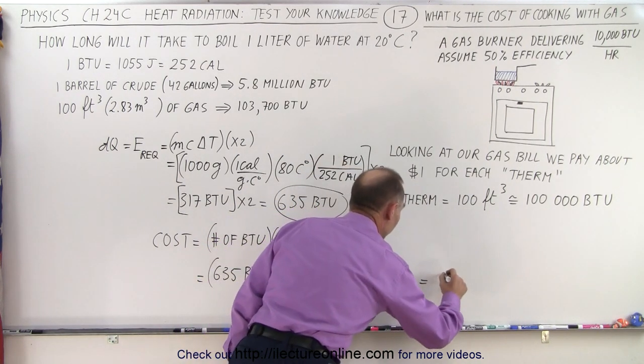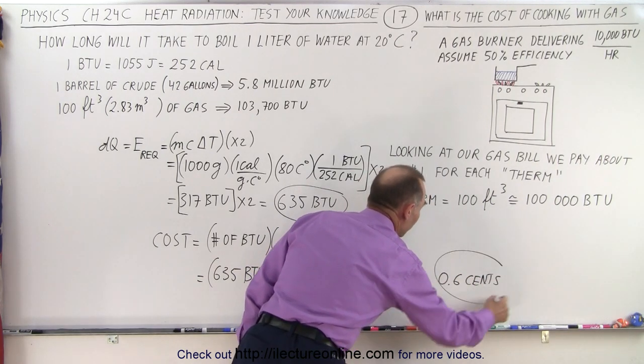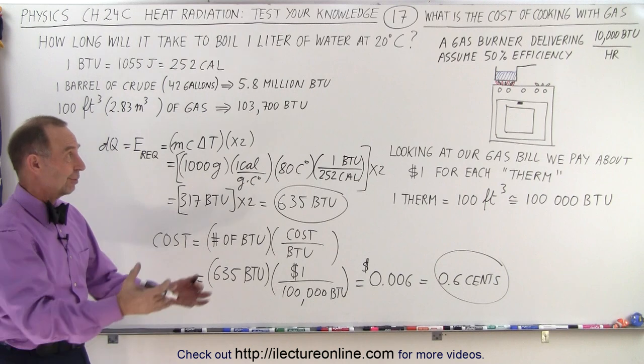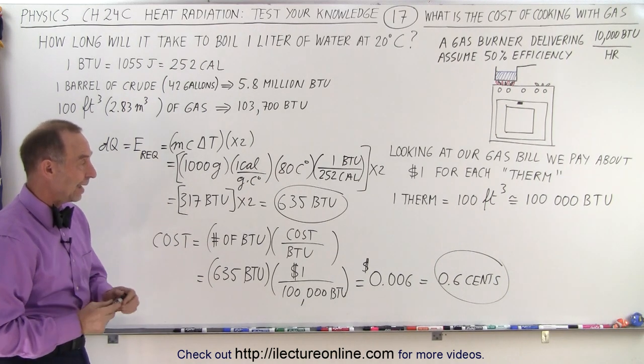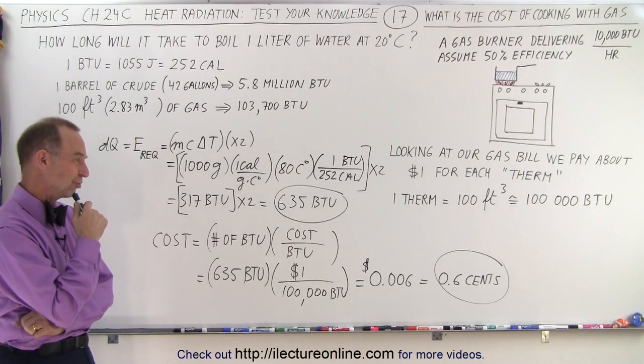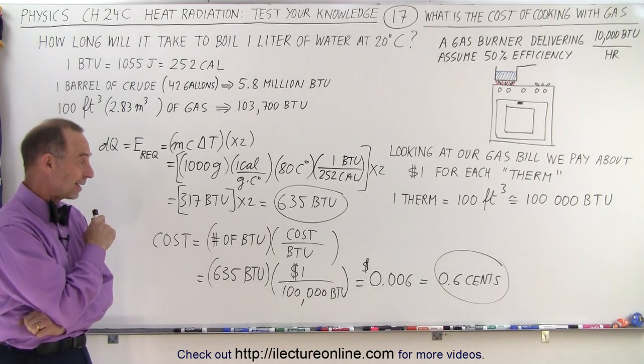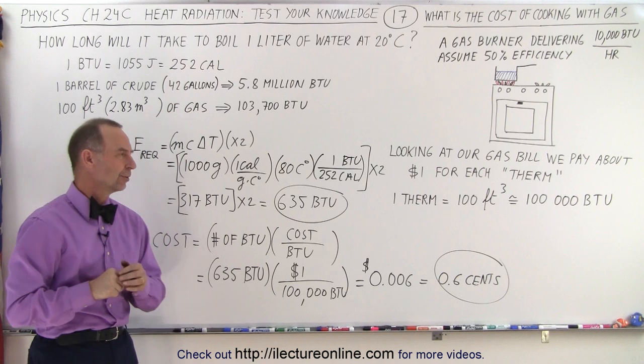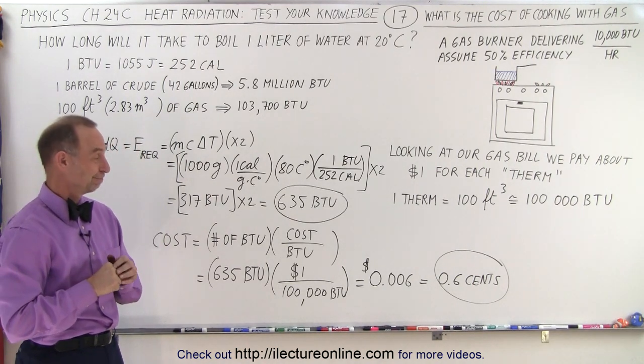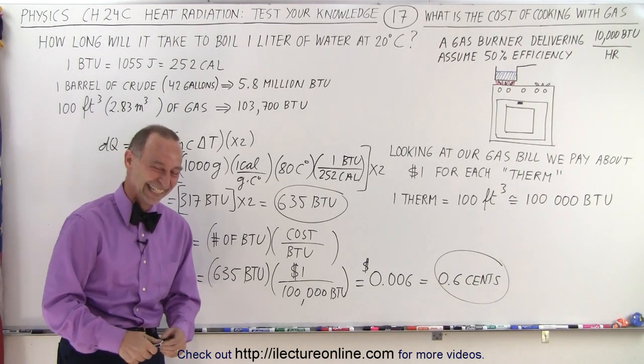Which is equal to 0.6 cents. So that means it costs a little bit over a half a penny to take a liter of water from the tap at room temperature and get it up to boiling. That's not a lot of money. I think I'm going to let my wife keep the gas stove and we'll wait a little longer on that solar oven in the backyard. So I think we can still afford to boil water using our gas stove. So our wife is safe. We can keep the oven. No, we'll be eating cereal for a while.